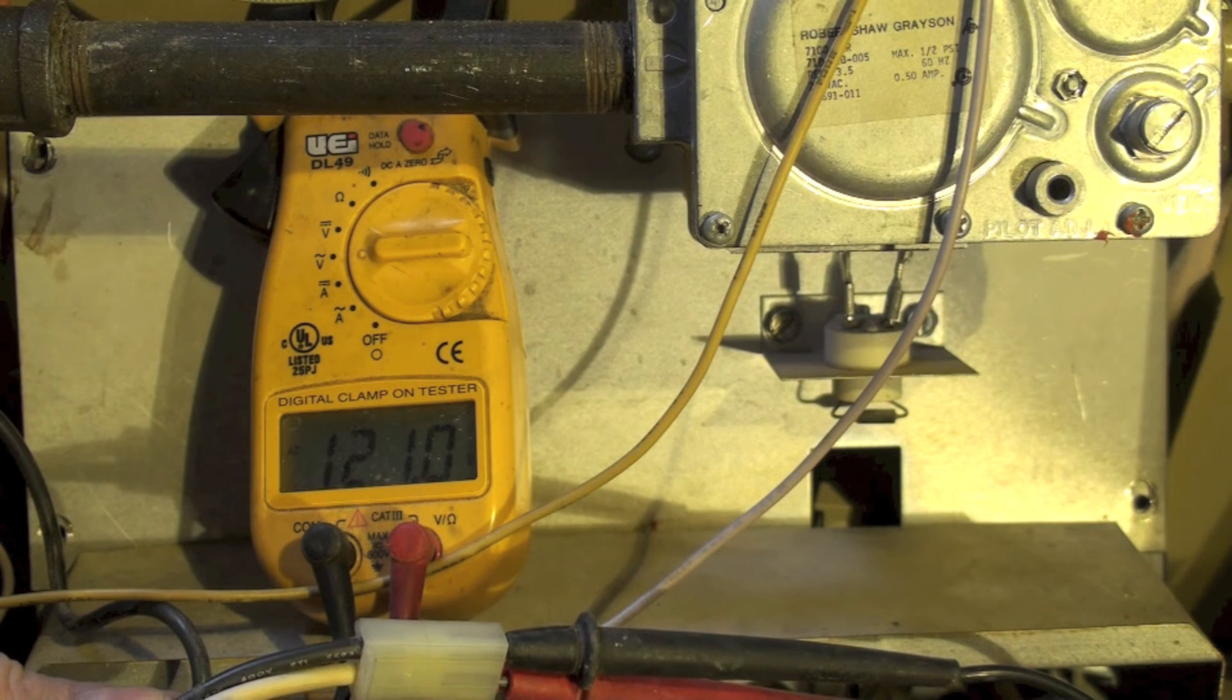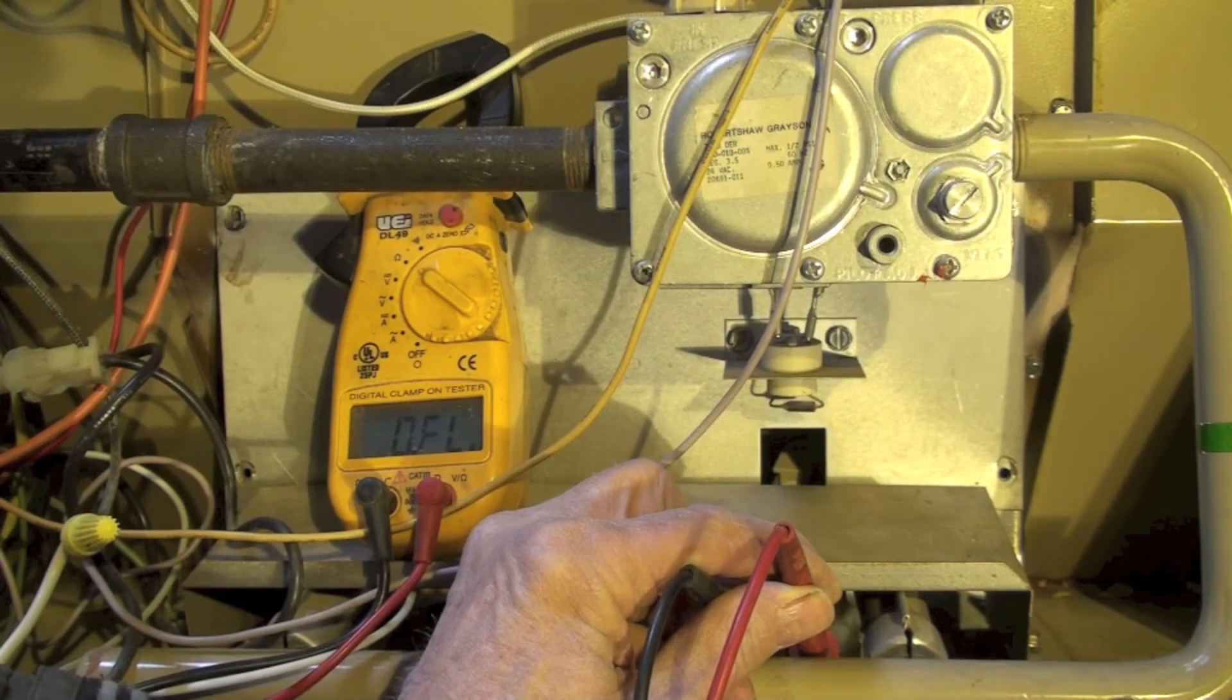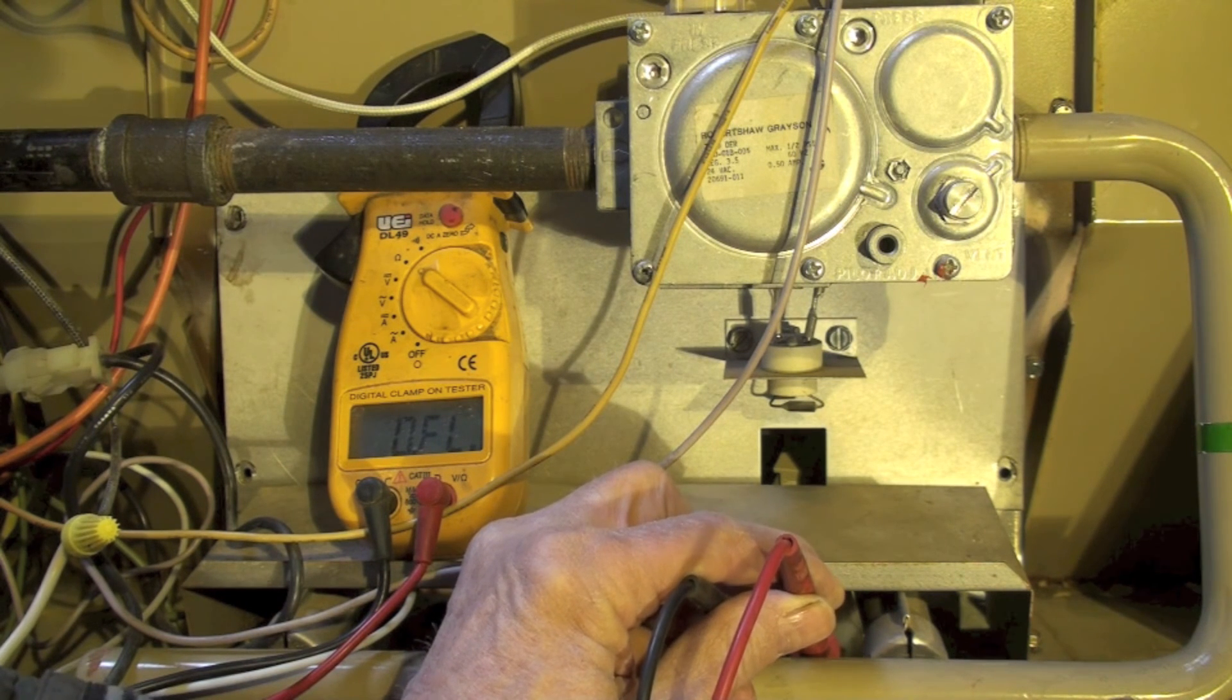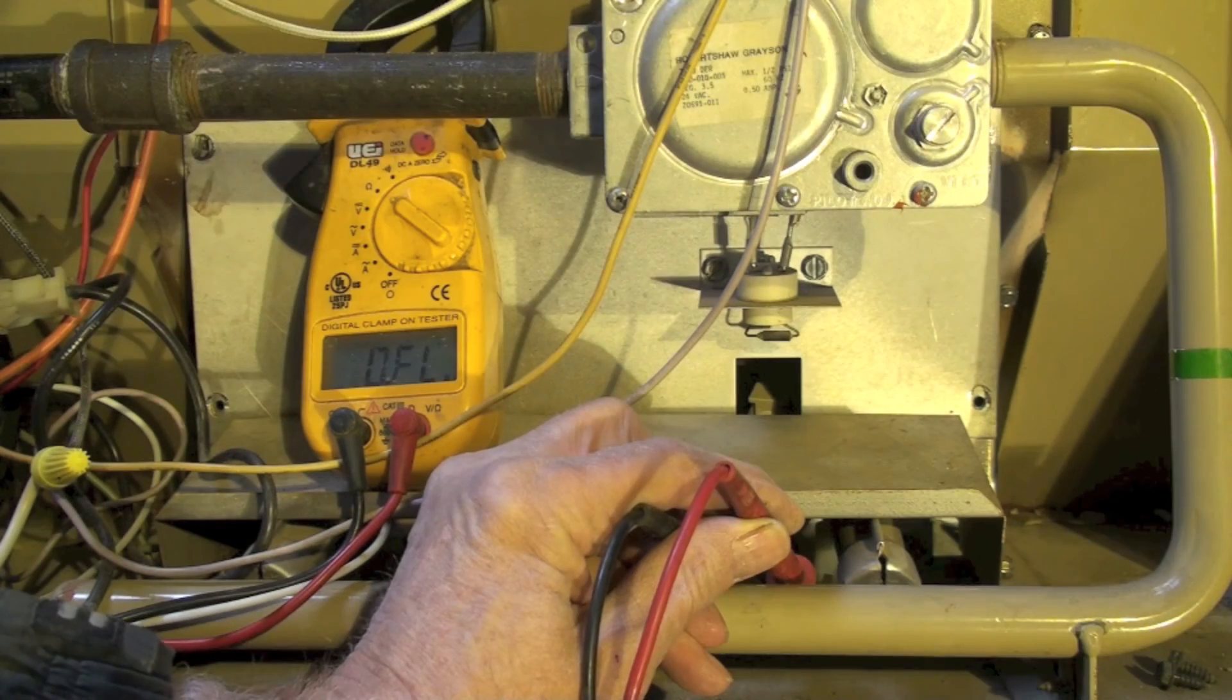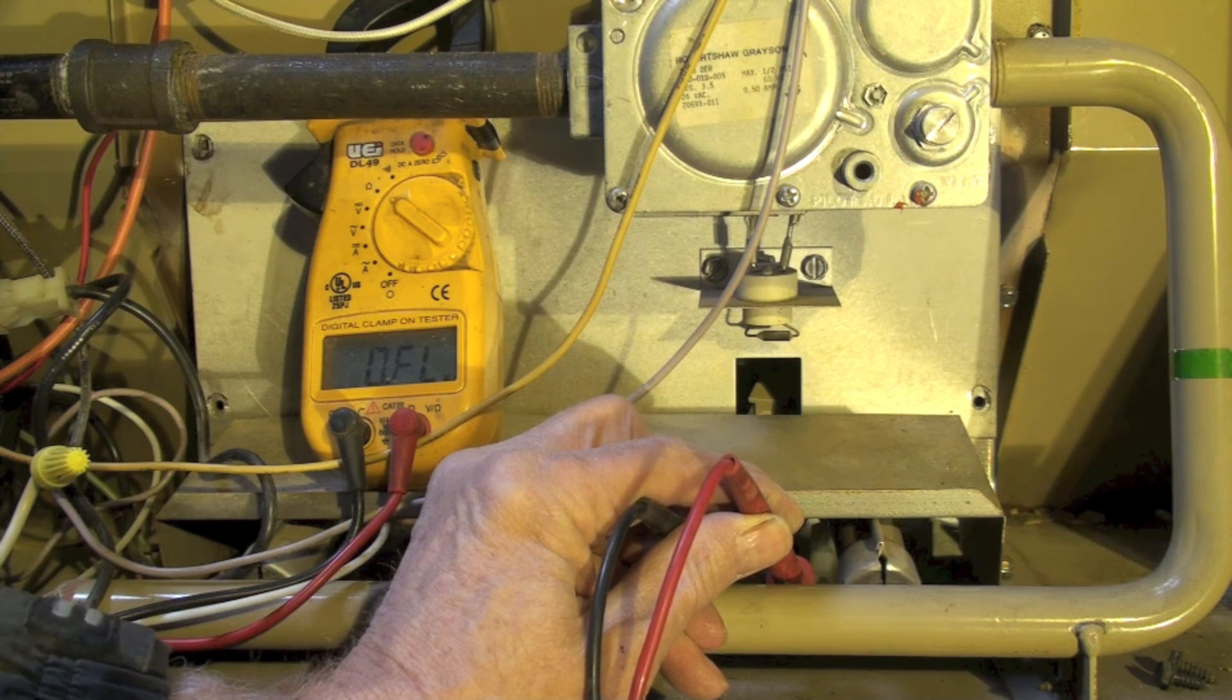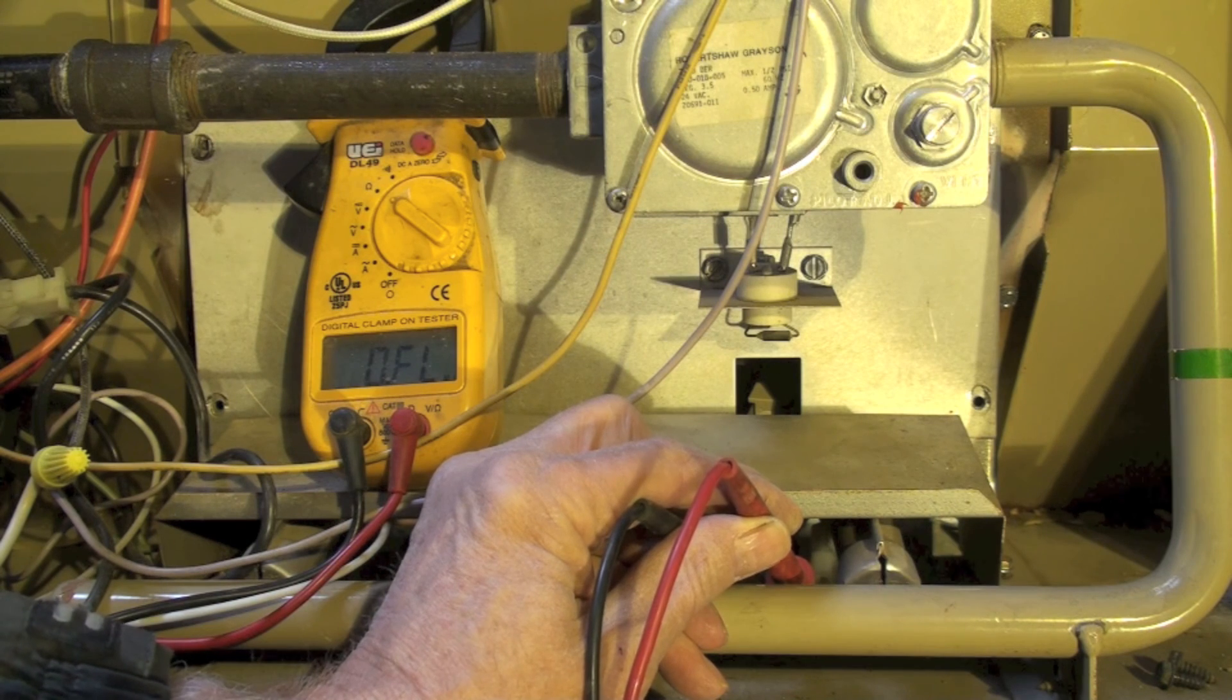So let's check out the hot surface igniter. Here I've put my probes on the hot surface igniter wire - it's a little hard to see there. I'm showing open on the meter, so I've diagnosed this thing: the hot surface igniter has failed. We need a new hot surface igniter.